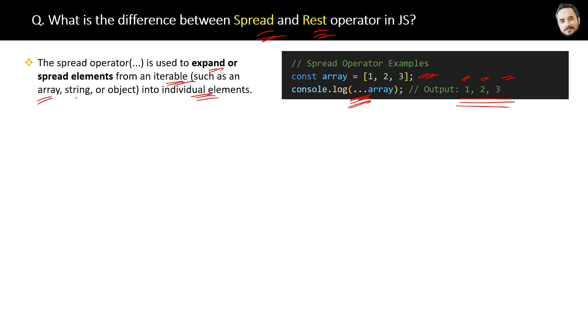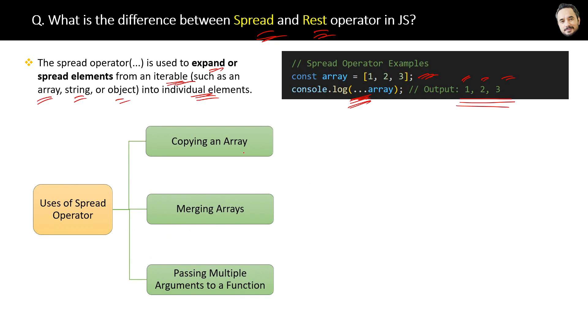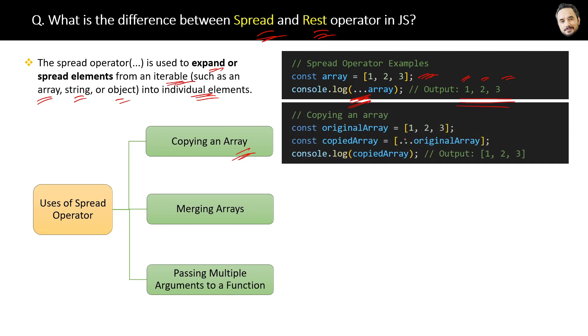Now we can use the spread operator for three purposes basically. The first purpose is for copying an array. So in the code you can see we are using the spread operator to break the original array into individual elements, and since this is inside square brackets, therefore these elements will be converted back into an array which is assigned to the variable copied array.